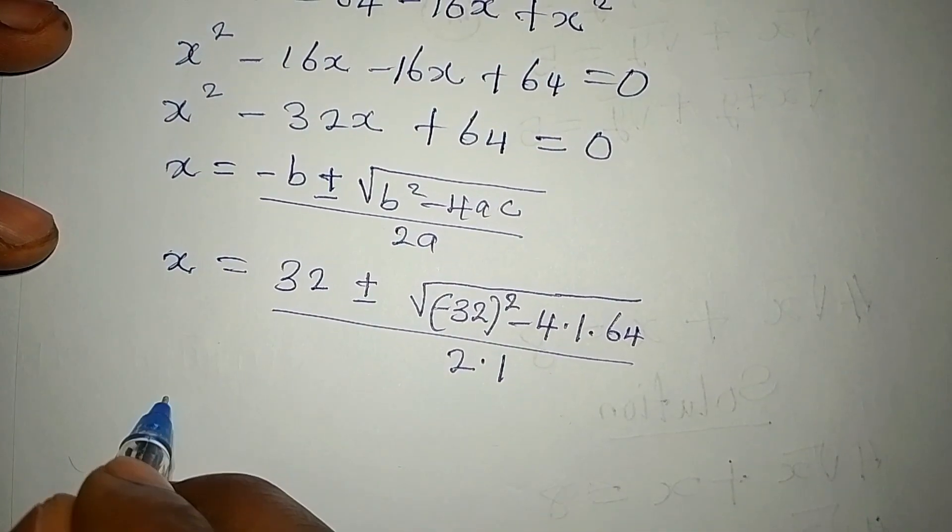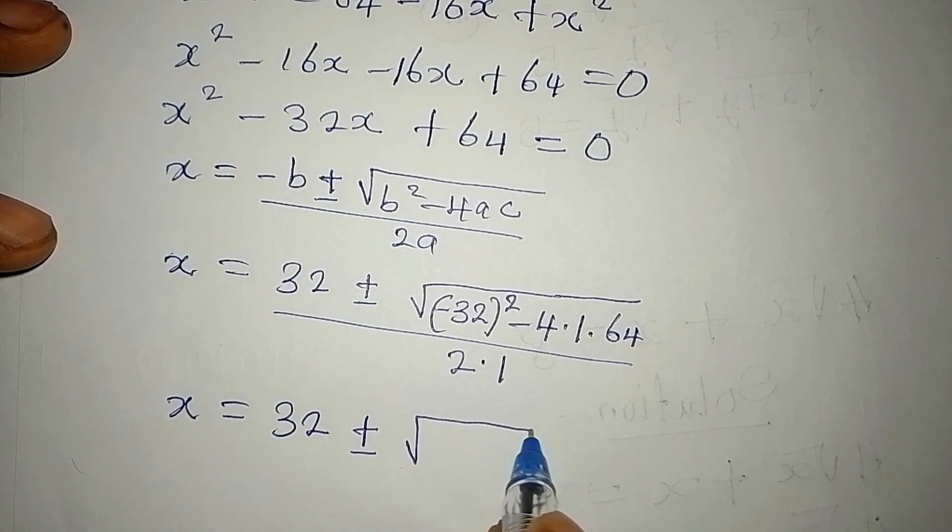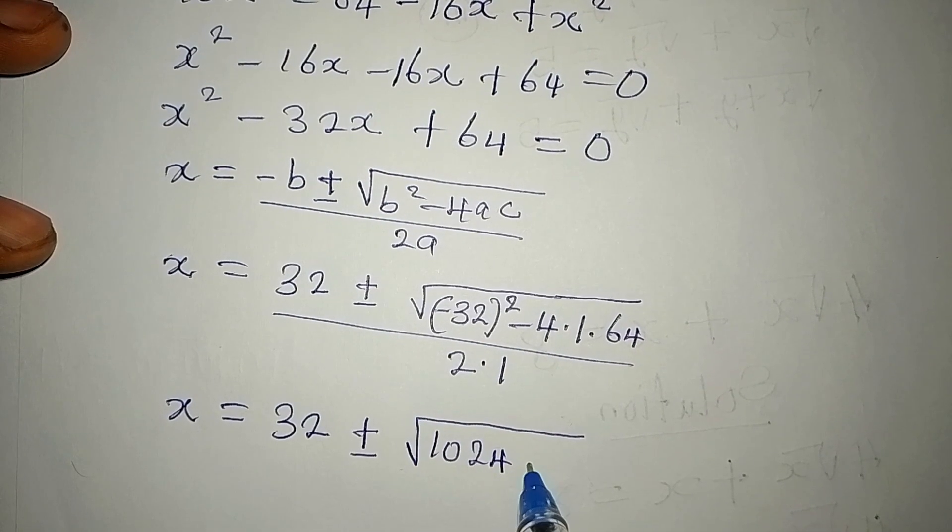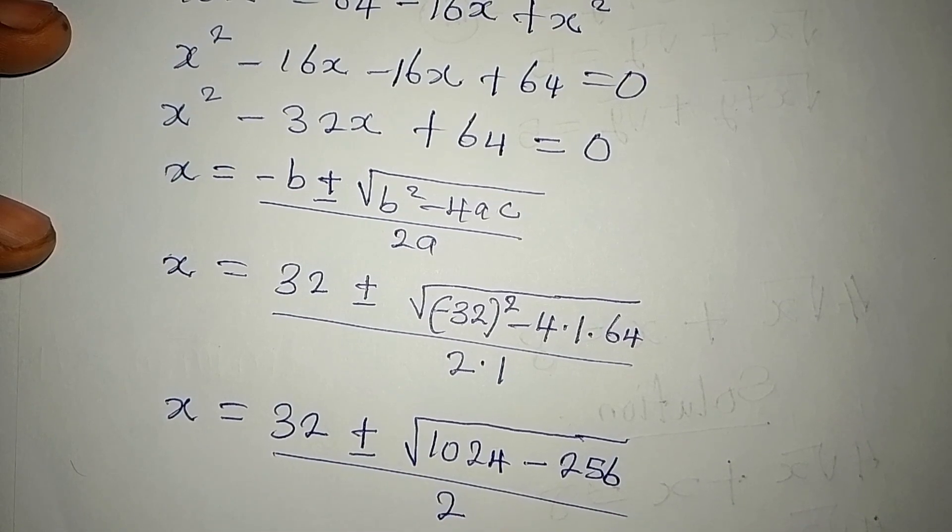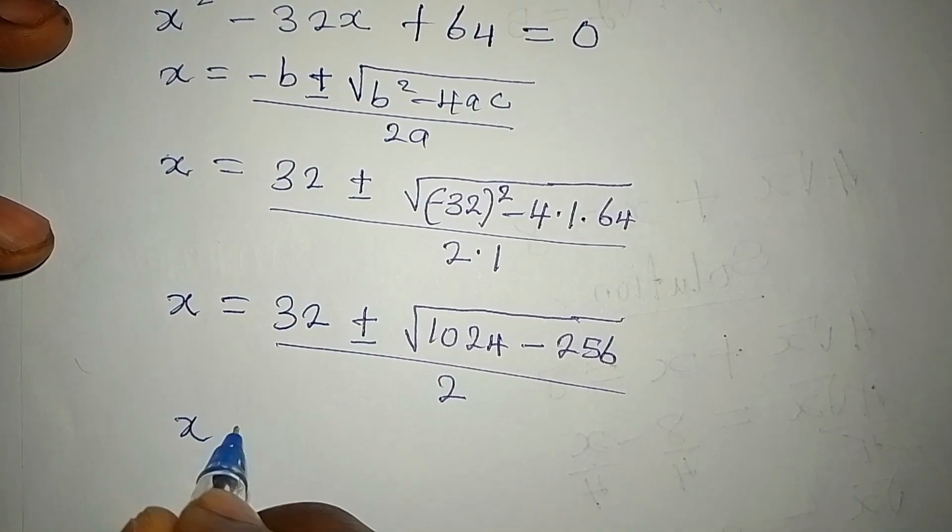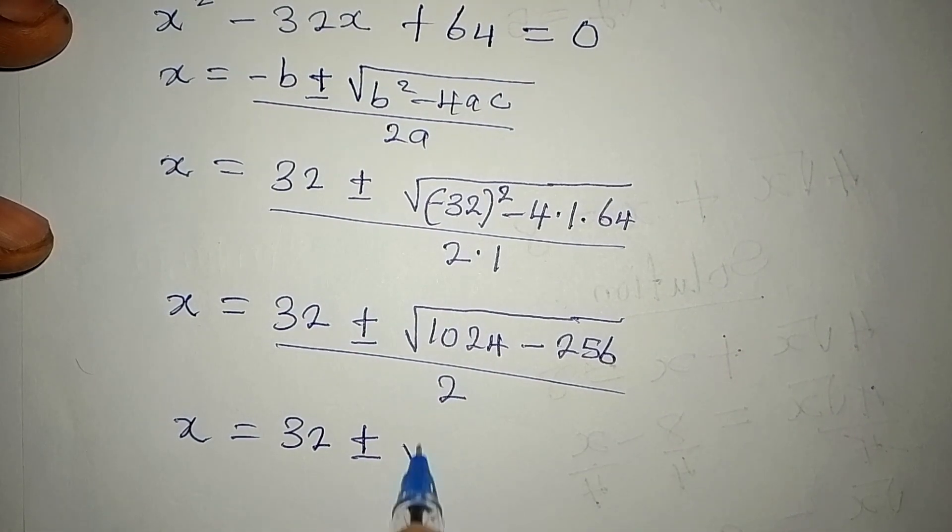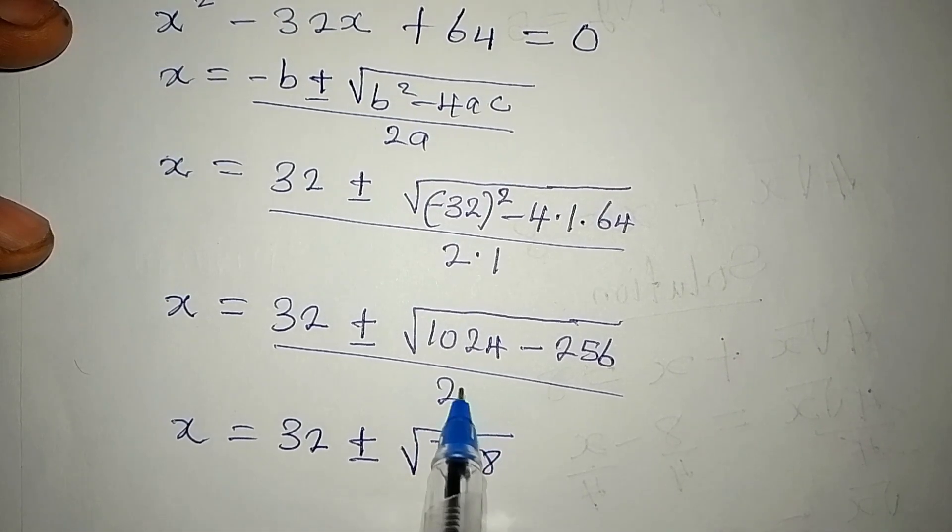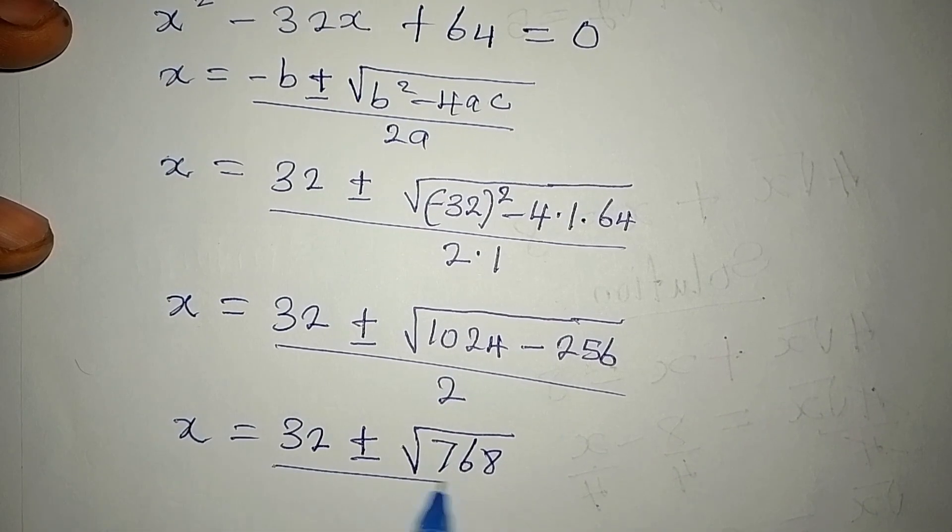Now from here, x is equal to 32 ± ... We have -32 squared will give 1024. Then minus 4 times 64 is 256. Then we divide everything by 2. Now x is equal to 32 ± √768, because 1024 - 256 is 768, and that is over 2.